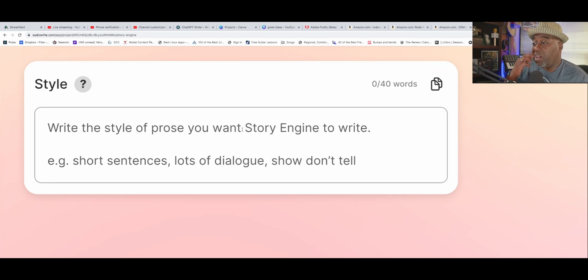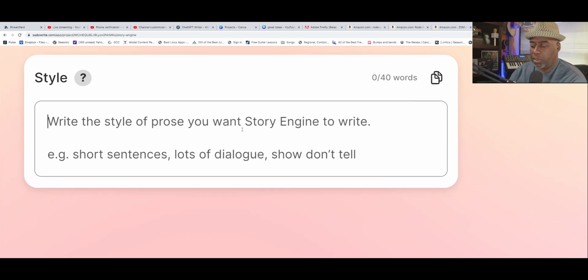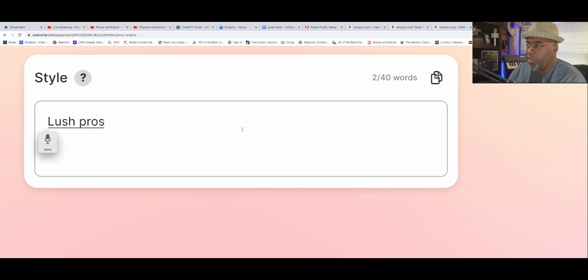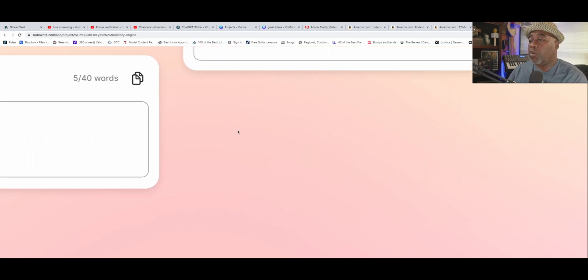Then, the style. I want lush prose with 1950s sensibilities. That way, hopefully, it will write something like Arthur C. Clarke or something like that. And then, I go over here to the synopsis.